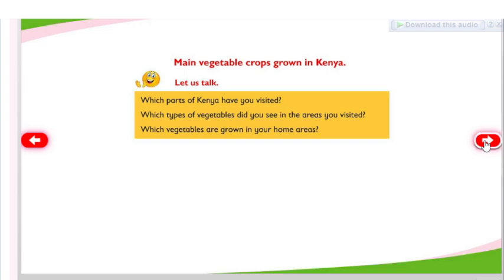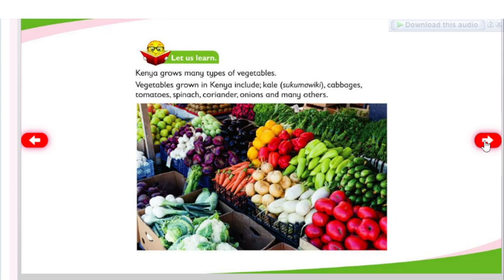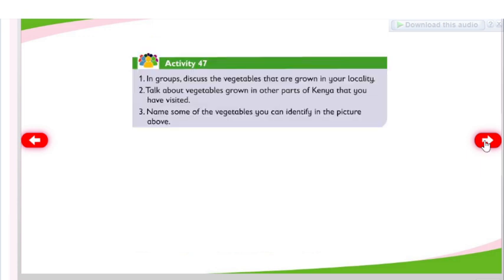Kenya grows many types of vegetables. Vegetables grown in Kenya include kale or sukumawiki, cabbages, tomatoes, spinach, coriander, onions, and many others. Activity 47: In groups, discuss the vegetables that are grown in your locality. Talk about vegetables grown in other parts of Kenya that you have visited. Name some of the vegetables you can identify in the picture above.